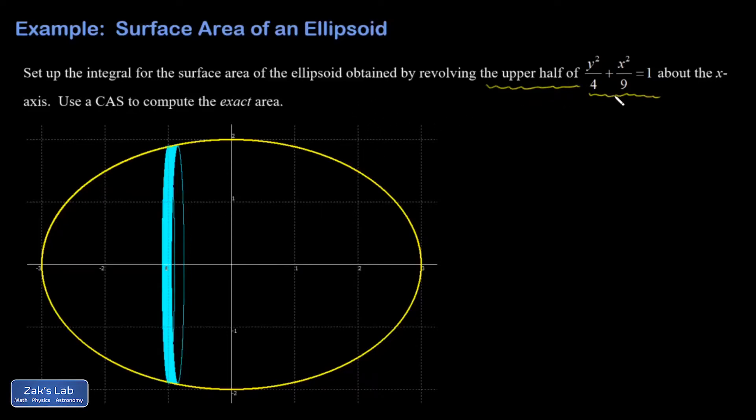Okay, the upper half of an ellipse is revolved around the x-axis to create an ellipsoid. And I need to get an equation for that upper half. So I'm going to have to solve this for y and just keep the positive root.